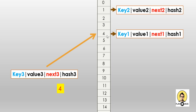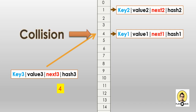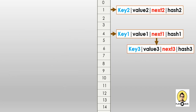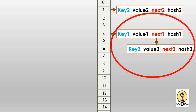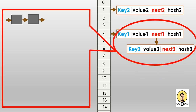When a collision happens, the second key — key3 — becomes the next of key1. It is stored in the form of a linked list, pointing to the next node. So key1, key3, and any subsequent nodes keep increasing in the linked list. Before Java 8, up to Java 7, nodes would just keep increasing in this linked list, and retrieving data from these nodes would take a lot of time.